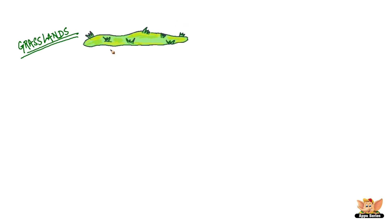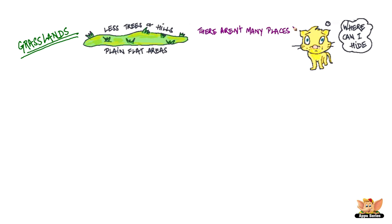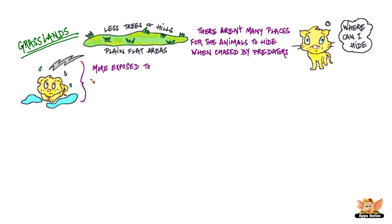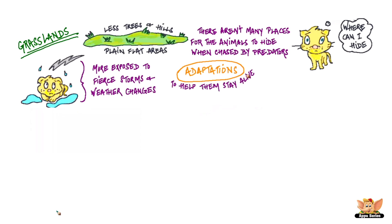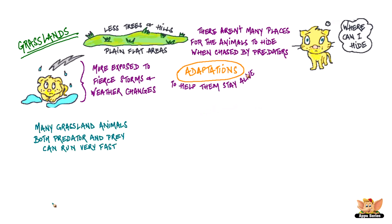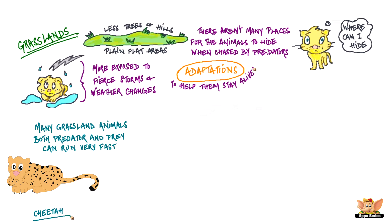Grasslands are plain flat areas with less trees and hills. It's a challenging place to live for animals as there aren't enough places for them to hide when they are chased by predators. The animals that live here are also more exposed to fierce storms and weather changes. So they have developed adaptations that help them stay alive. Many grassland animals, both predator and prey, can run very fast. Cheetah and deer are some of the fastest animals.